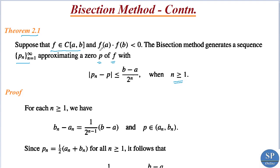This theorem states that if this condition holds, then the bisection method will give us a sequence of numbers which approximates a zero of f, satisfying the condition that the absolute value of the difference between the original root and the approximate root is less than or equal to (b - a) / 2^n. This theorem gives us a bound for the approximation error, and by using this we can find the number of iterations needed to solve f(x) = 0 with a given accuracy.